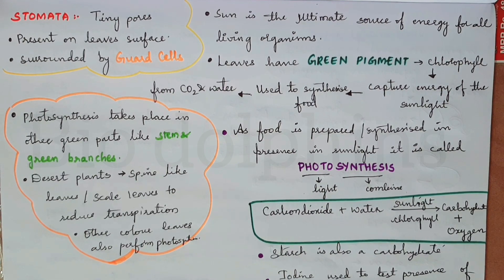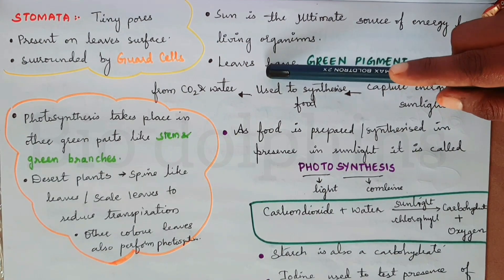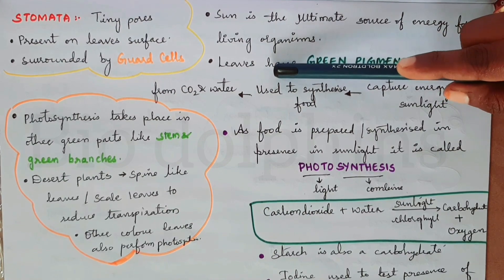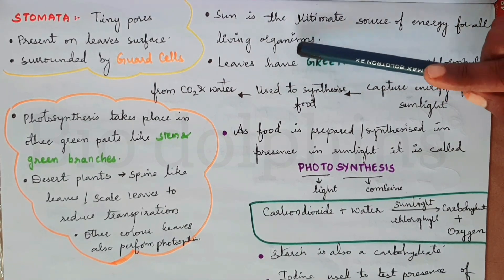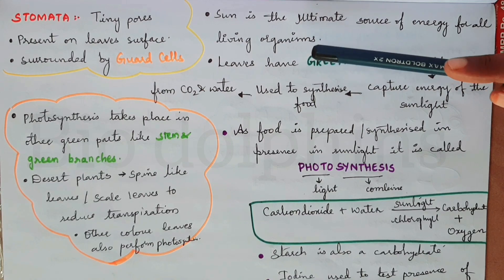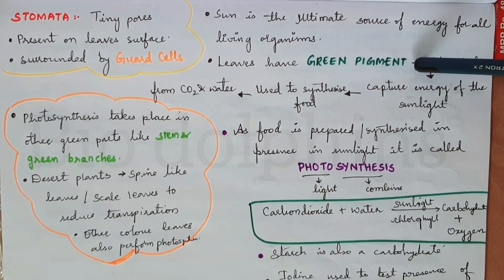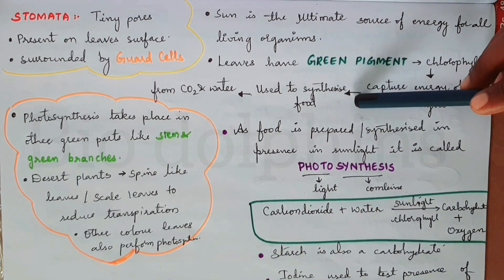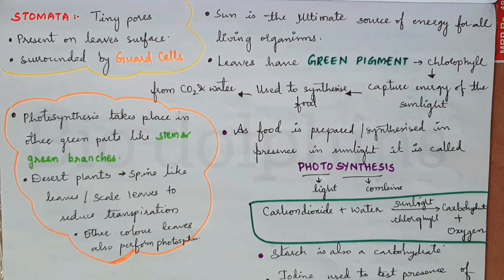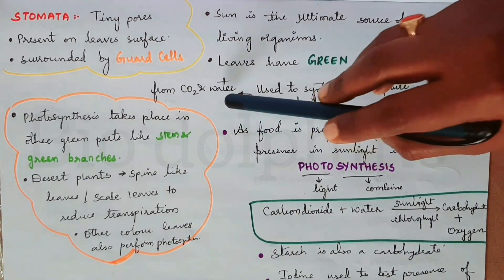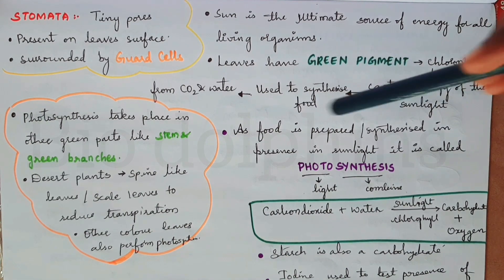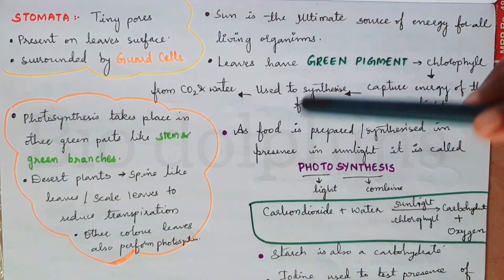The sun is the ultimate source of energy for all living organisms. The food factories of the plant are the leaves. Leaves have green pigments called chlorophyll. Chlorophyll captures sunlight to synthesize food. With the help of sunlight, carbon dioxide and water, leaves synthesize food.